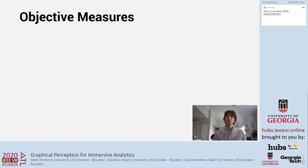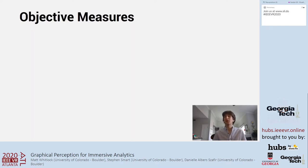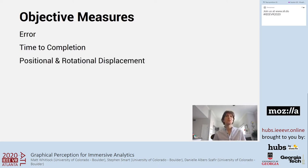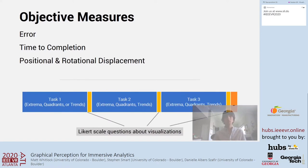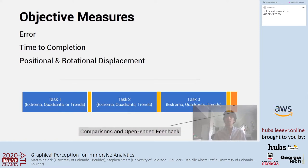We took several measures, both objective and subjective. We were primarily interested in error and time to completion for each trial, but also in how much participants navigated the environment, measured as the positional and rotational displacement of the camera game object at each frame. In between each block, we collected measures on how much participants preferred each visualization type through Likert scale questions, and after all three blocks, there was a final questionnaire with more Likert scale questions and open feedback.